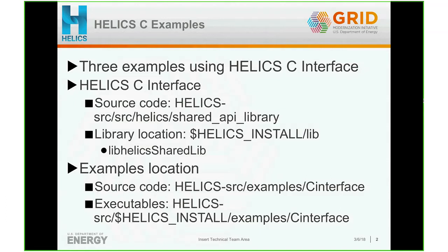I wanted to give you the location of where you can find the Helix source code. The Helix source code is located in the root directory: /source/helix/shared_api_library. This is the directory where you'll find the source code and all the header files that have the C interface API.